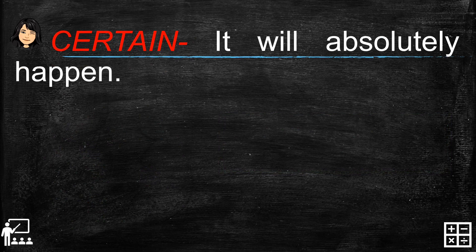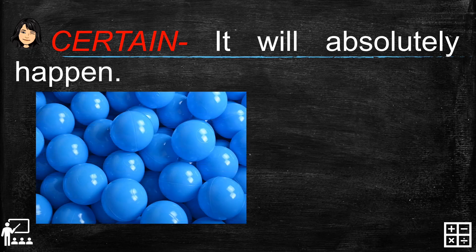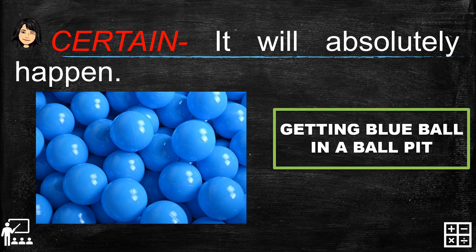Last is certain — it will absolutely happen, one hundred percent. Just like a child in a ball pit that has only blue balls. There are a lot of blue balls in the ball pit, so if you ask a child to pick a color blue, it will certainly happen — one hundred percent they will get a blue ball — because there is only one color in the ball pit. So it's certain to happen, one hundred percent. That's all, see you in my next topic.